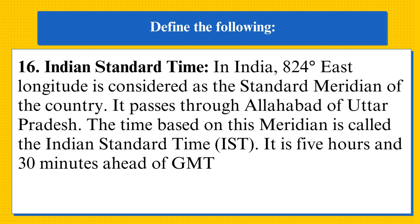Indian standard time: in India, 82½° east longitude is considered as the standard meridian of the country. It passes through Allahabad in Uttar Pradesh. The time based on this meridian is called the Indian Standard Time, that means IST. It is 5 hours and 30 minutes ahead of GMT.